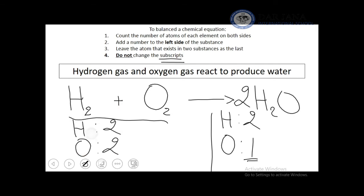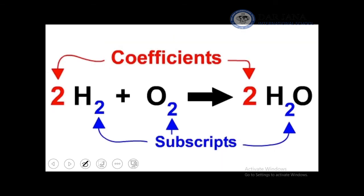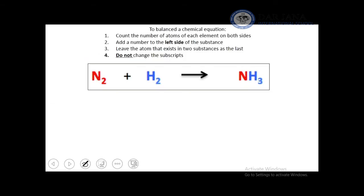After placing coefficient 2 before H₂O, hydrogen becomes 4 atoms on the product side, so we multiply H₂ by 2 on the reactant side to get 4 hydrogen atoms, and oxygen is now balanced (2 on each side). The balanced equation is: 2H₂ + O₂ → 2H₂O. A coefficient is written before the substance; a subscript is written under the element to show how many atoms of that element are present.